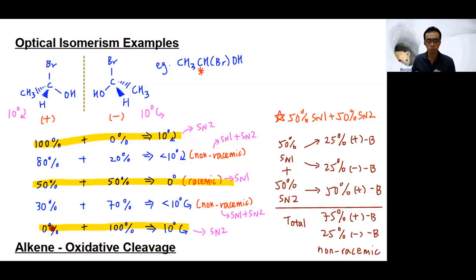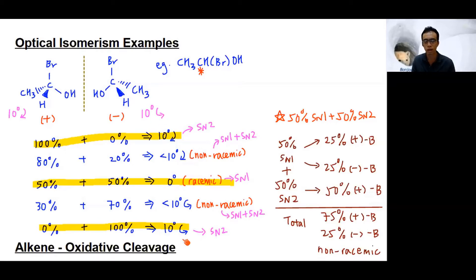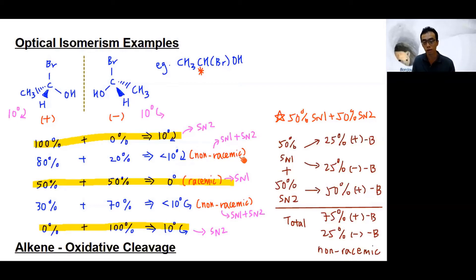In the syllabus: if the mechanism goes by SN2, I get a pure sample — 100% plus or 100% minus isomer — so optical activity is 10 degrees clockwise or 10 degrees counter-clockwise. If the mechanism goes by SN1, the carbocation is flat and equally exposed, so it can be attacked from both sides to equal extent, giving a racemic mixture, which is optically inactive.